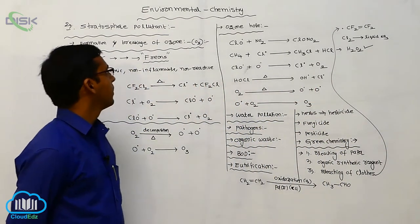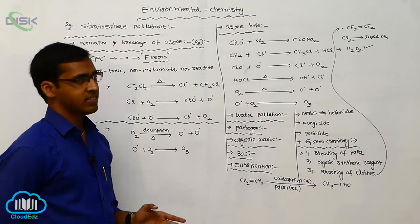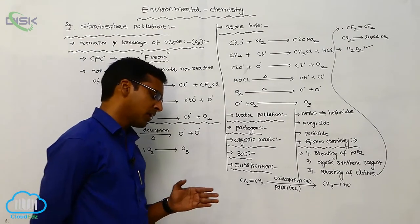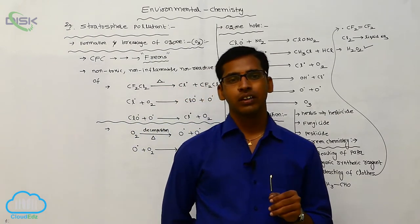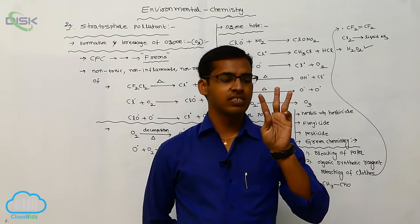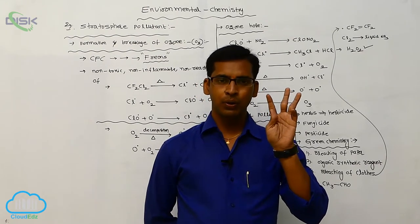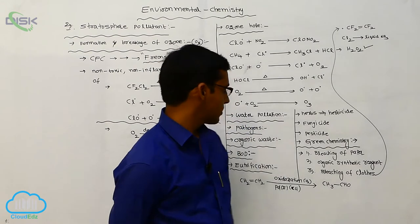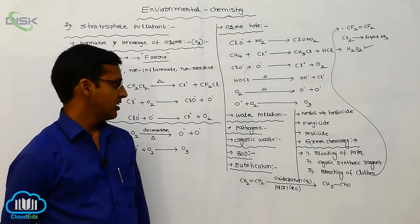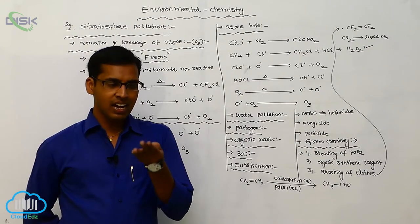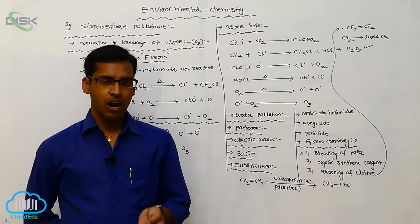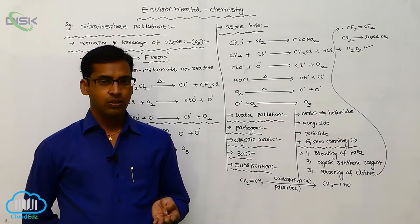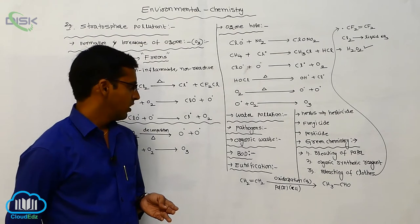These are the pollutants we have discussed: troposphere pollutant and stratosphere pollutant for air pollution. There are three significant factors: air, water, and soil. Water pollutants include pathogens, organic waste materials, and alkali metals. Whenever the metal concentration increases in water like seawater, groundwater, or lake water, it causes side effects.